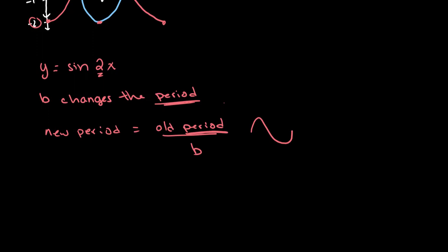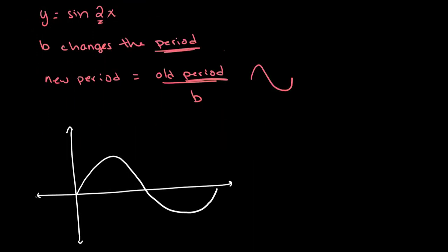So as always, let's first draw our graph of y equals sine of x. This is 180 degrees. This here is 360 degrees. Then we have 90 and 270.